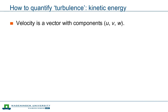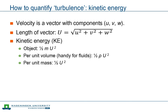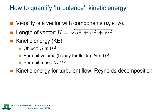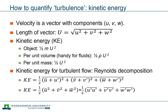Until now we have talked qualitatively about turbulence, but let's see if we can quantify the amount of turbulence. Since turbulence is moving air, the way to quantify it starts with the velocity vector, whose length is based on the three-dimensional Pythagorean theorem. To quantify the amount of motion we use kinetic energy. For fluids, the mass is not easily identified, so we use density to obtain kinetic energy per unit volume, or we define the specific kinetic energy per unit mass. Decomposing the velocities into mean and deviating parts, we see that the total kinetic energy is the sum of the mean kinetic energy and the turbulent kinetic energy.